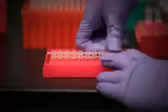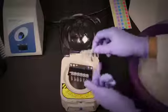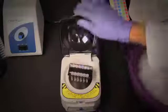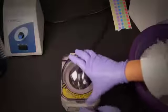After adding capture probe, put caps on the tubes, flick the tubes gently to mix the components in each one of the different tubes, and then spin it down briefly in the picofuge to collect everything to the bottom of the tube.